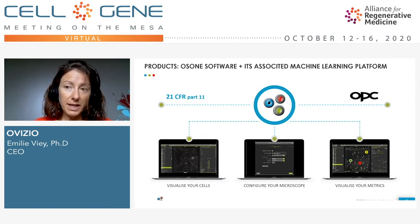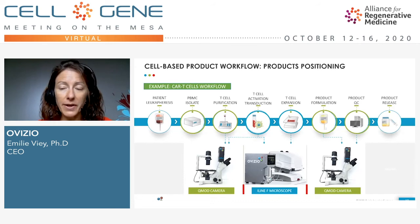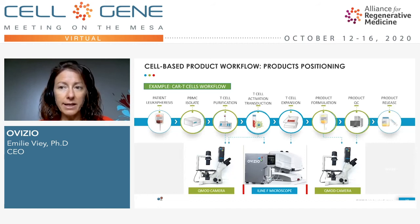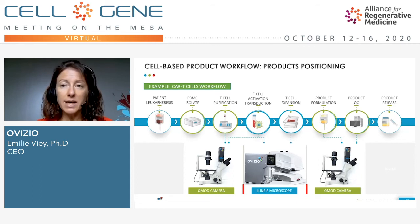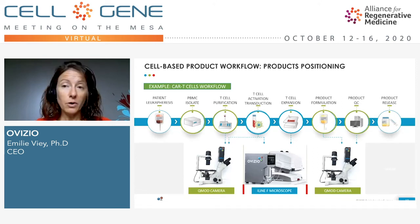The AlignF microscope can be connected to your network via OPC. In the cell therapy field, here is the CAR-T cells workflow as an example. We are mainly addressing this workflow with the AlignF microscope for the steps requiring activation, transition, and expansion, connecting to the bioreactor to monitor all cell quality attributes and critical process parameters in real time. On the same workflow, we position the QMOD camera upstream and downstream, at lower throughput, for quality control of any sample taken at one of the steps.